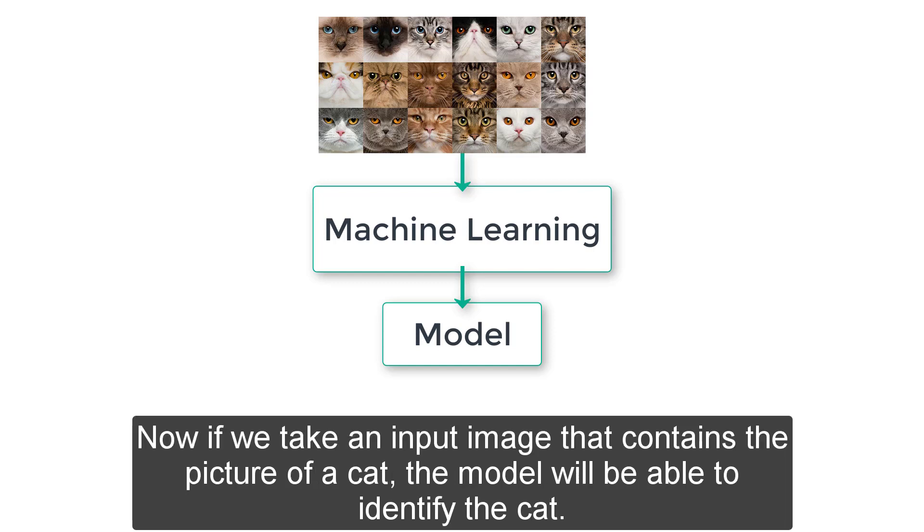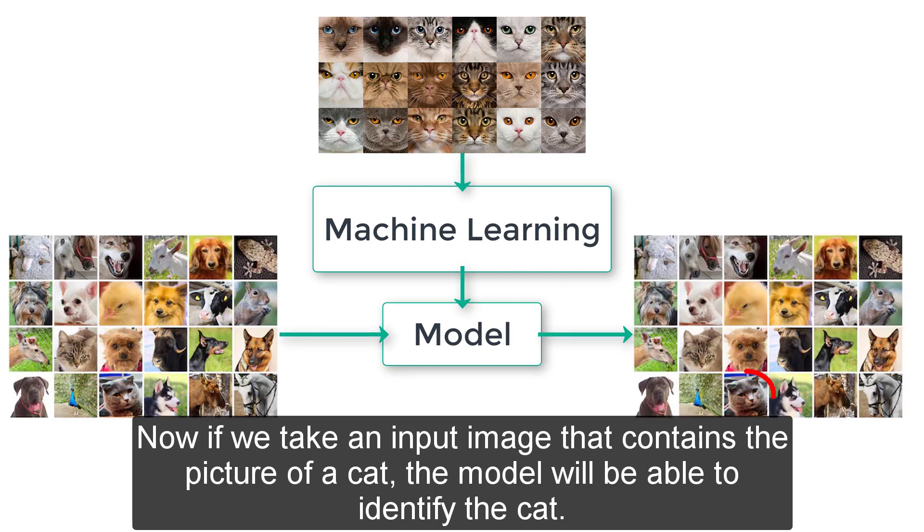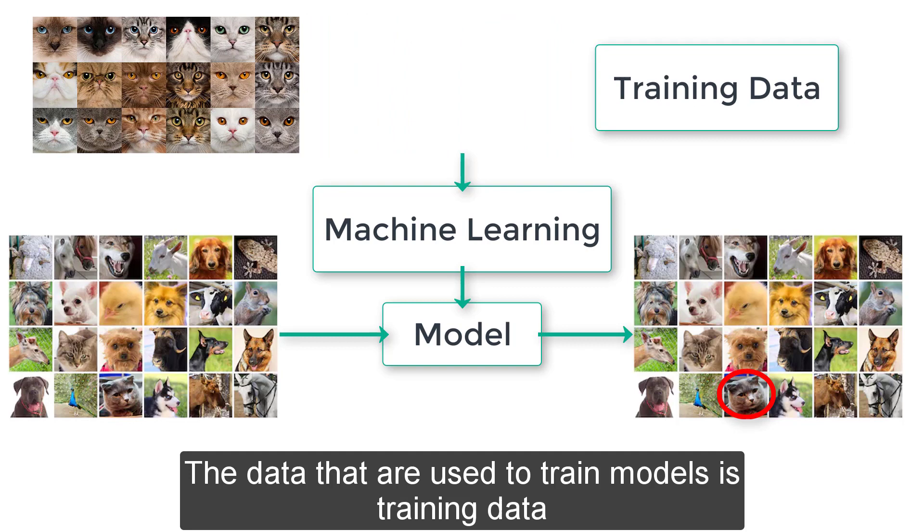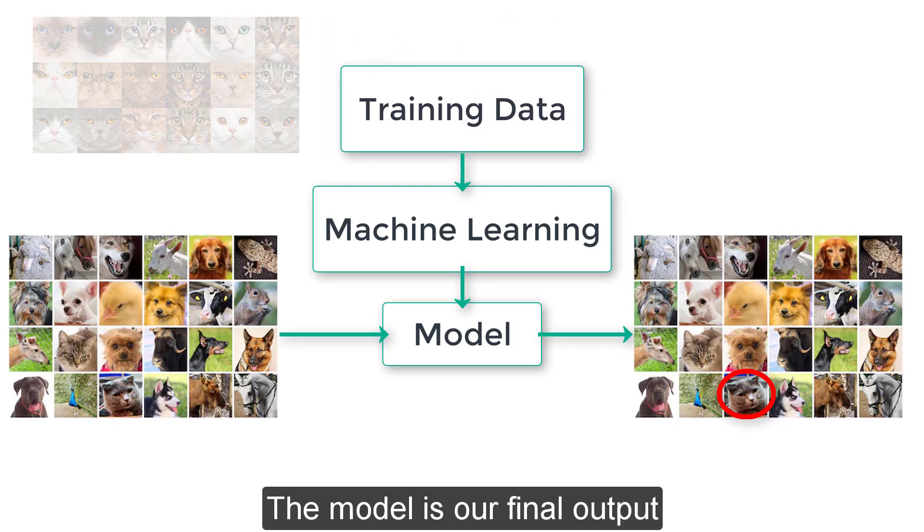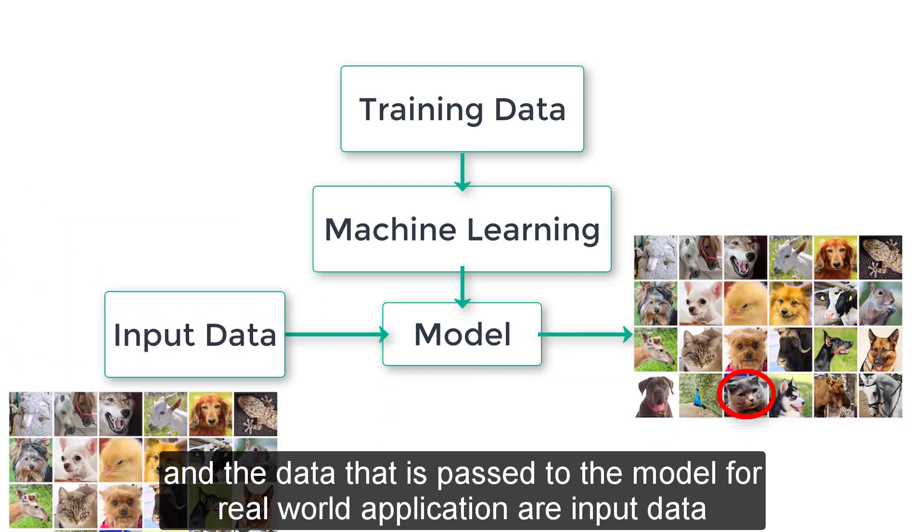Now, if we take an input image that contains the picture of a cat, the model will be able to identify the cat. The data that are used to train the model is called training data. The model is the final output and the data that is passed to the model for real world application is called input data.